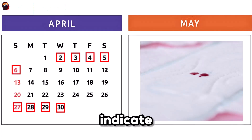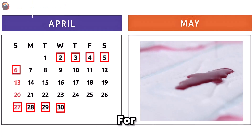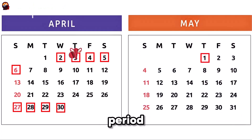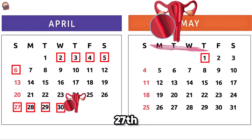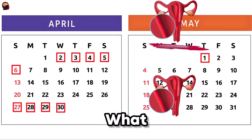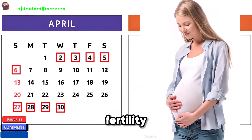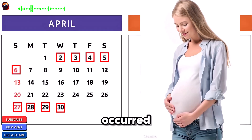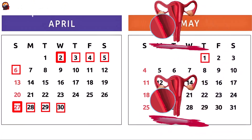The numbers in red indicate the days of period. For example, the period occurred on April 2nd and 27th. What are the days of maximum fertility if the period occurred on April 2nd and April 27th?